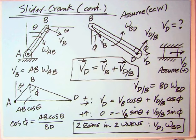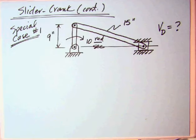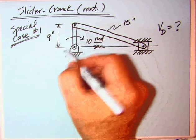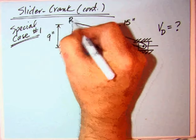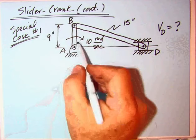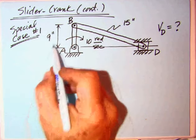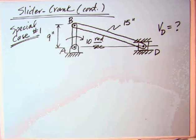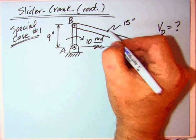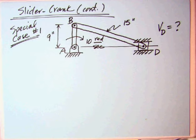You may or may not feel comfortable with that, but there are two special cases that I'd like to show you that you don't want to let them have. They're just too easy. Special case number one is where AB is vertical. It's a clockwise rotation, 10 radians per second. Nine-inch distance between A and B. The connecting rod is 15 inches long. The question is, what is the velocity of D, both magnitude and direction?